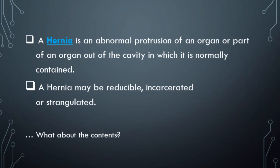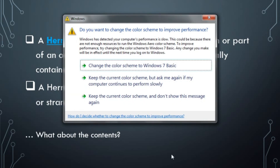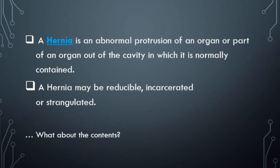As we know, the classical definition of a hernia is the protrusion of a normal organ from its normal position. This applies to external hernias, because I'm also going to talk about internal hernias and you'll see the difference. A hernia may be reducible, incarcerated, or strangulated.